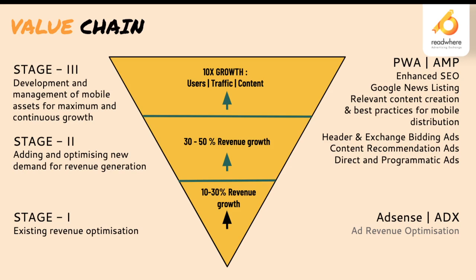Stage three is 10x growth — the vision every publisher has. You can optimize ads to achieve 10 to 50% uplift, but to grow beyond that you need stage three: concentrating on content and delivery of content. This means page speed improvements, enhancing SEO, Google News listing for Discover traffic, relevant niche content creation attracting Discovery and audiences, and following best practices for mobile distribution — creating Progressive Web Apps that load instantly, having Accelerated Mobile Pages, and ensuring all PWAs and AMPs have best ad practices.